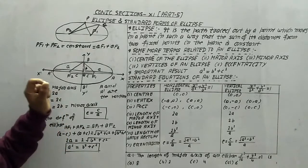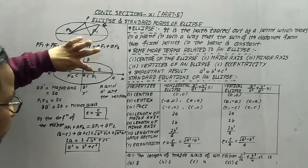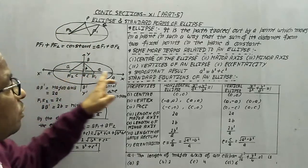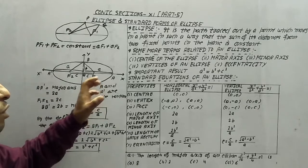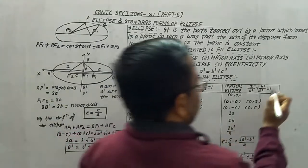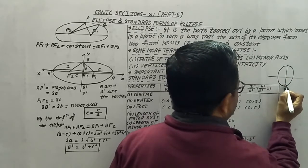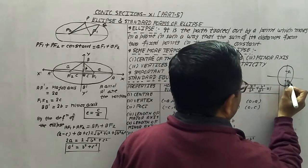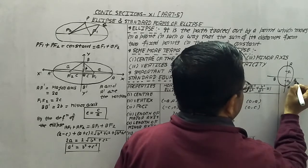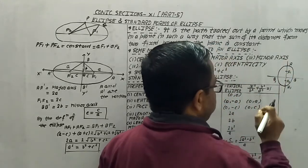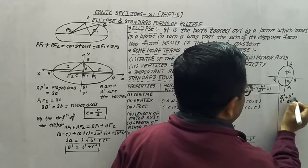Now we develop the standard form of the ellipse. If the foci lie on the x-axis, it is called a horizontal ellipse; if the foci lie on the y-axis, it is a vertical ellipse. For the vertical ellipse, the equation is x²/b² + y²/a² = 1. For the horizontal ellipse, the standard form is x²/a² + y²/b² = 1.